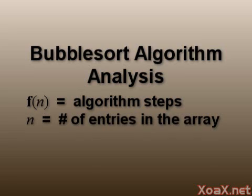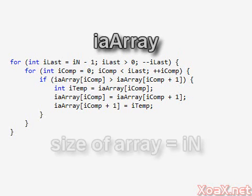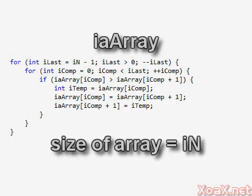For our purposes, we are assuming that the entries that we are sorting are in an array. Here's the C++ code for the bubble sort algorithm. The array that this sorts is iaArray, which in this case has size iN.